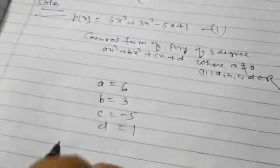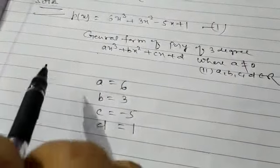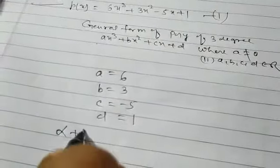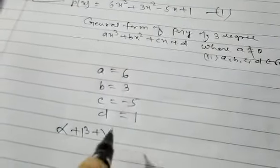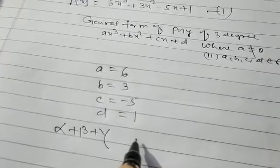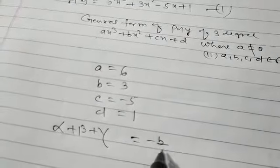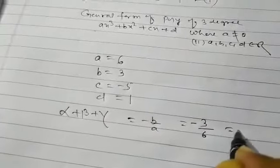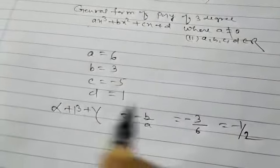Now, alpha, beta, gamma are the zeros of the polynomial. Then alpha plus beta plus gamma is equal to minus b by a. That is minus three by six, that is minus one by two.